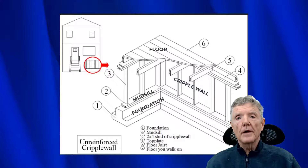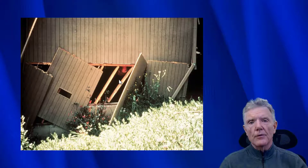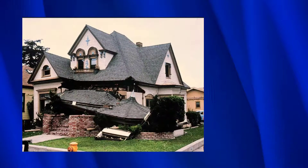If the cripple wall collapses, the house will fall off its foundation. Here's a good example of a cripple wall collapse — this is the cripple wall itself, here is the foundation, and this is the floor of the house. When it moved this way the cripple wall was just too weak. The purpose of a seismic retrofit is to make sure the cripple wall is so strong it does not collapse in an earthquake.